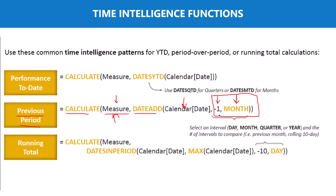This previous period pattern is very common and found in most calculations, especially for month-on-month percentages, quarter-over-quarter percentages, and year-over-year percentages. You simply choose the quarter, year, month, or day interval, use this pattern to get the previous period value, and then compute the difference between the current value and the previous value to calculate percentage changes.